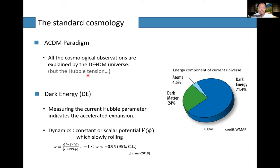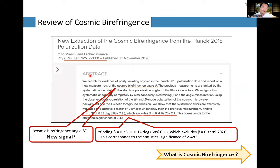This Lambda CDM paradigm is very well established and works very well, though there are some exceptions like the Hubble tension — I'll come back to this point later. However, three years ago, Minami and Komatsu's paper appeared in PRL, claiming they found something beyond Lambda CDM: cosmic birefringence by analyzing Planck 2018 polarization data.